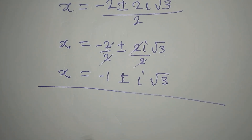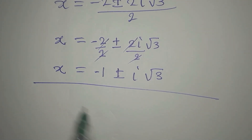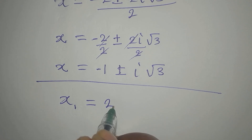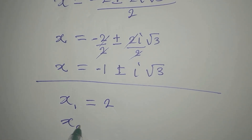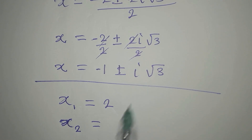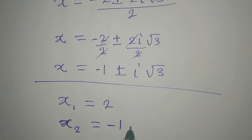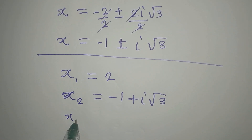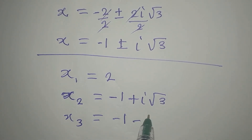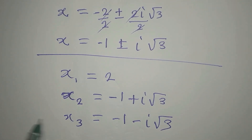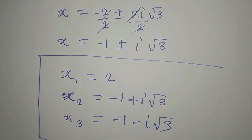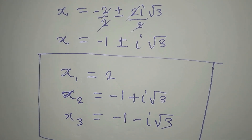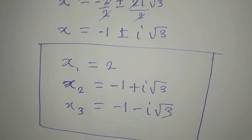Let's get all three solutions together. The first solution is x₁ equals 2. Then x₂ and x₃ come from the quadratic: x₂ equals negative 1 plus i root 3, and x₃ equals negative 1 minus i root 3. These are the three solutions to the equation. Thank you for watching.